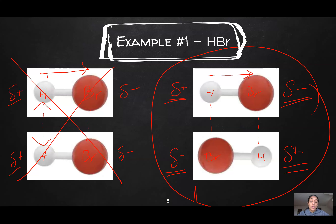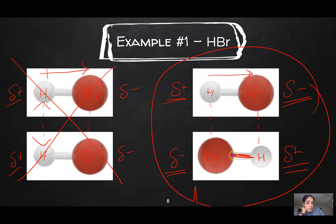That's really all a dipole-dipole force is. When molecules are polar, they have a dipole moment, meaning one end is going to be partially positive and one end partially negative. The molecules will arrange themselves so that the positive and negative ends of different molecules align to be attracted to each other. The dashed line is showing the dipole-dipole force — we are not talking about why the H bonds to the Br, but about the HBr molecule being attracted to another HBr molecule.